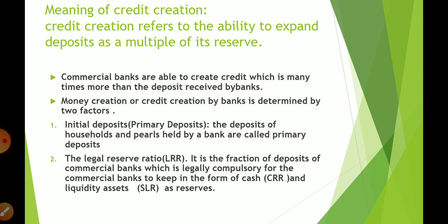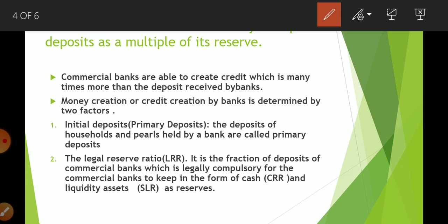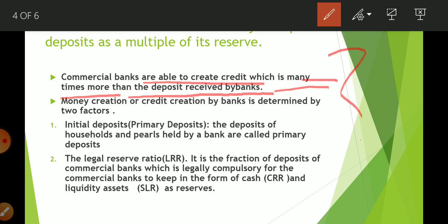Credit creation refers to the ability to expand deposits as a multiple of its reserve. Commercial banks are able to create credit which is many times more than the deposits received. The number of times depends on the money multiplier. The formula is: Money Multiplier = 1 / LRR.